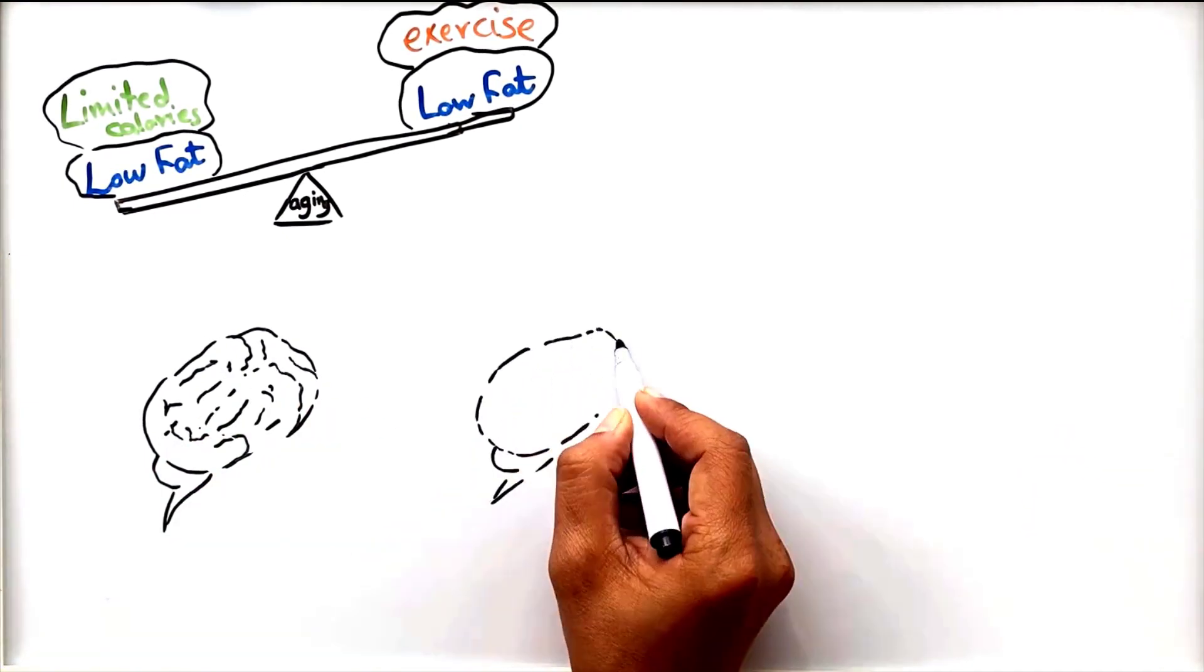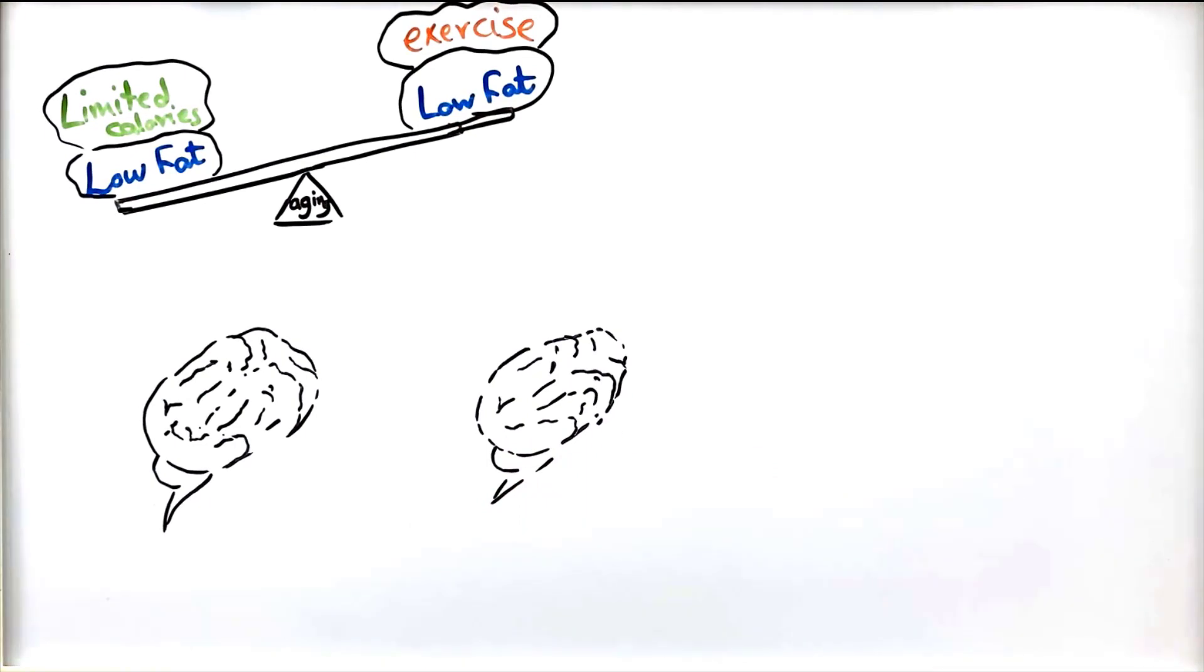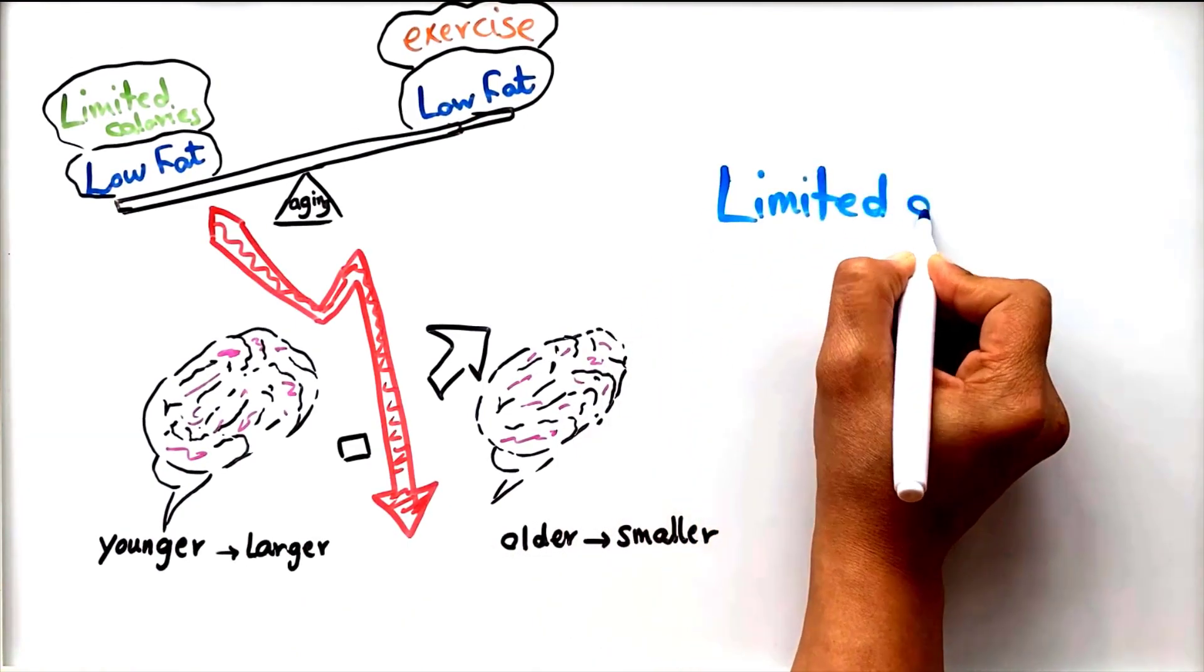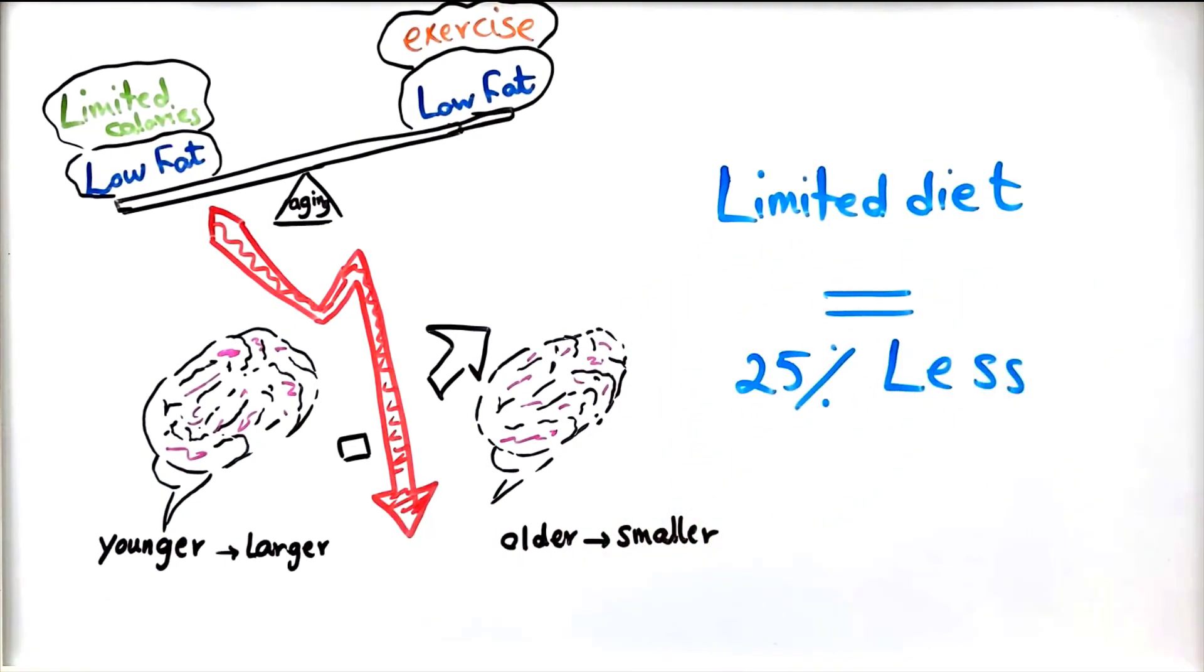This indicates that the fat content of a diet, as well as caloric intake, are important parameters for the detrimental effects of aging on the brain. Decreasing 25% of daily calories from your diet will delay the aging process.